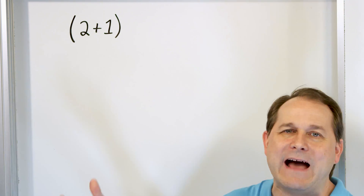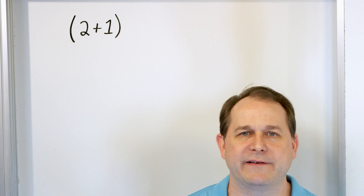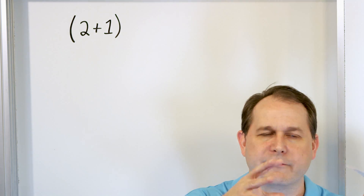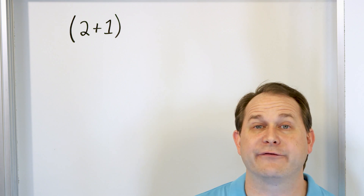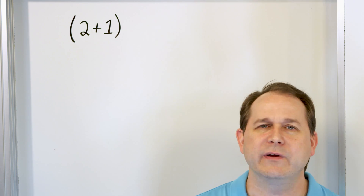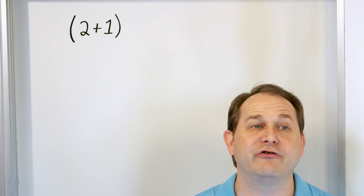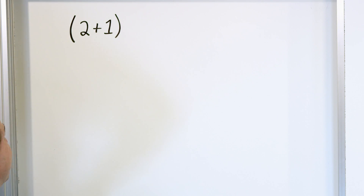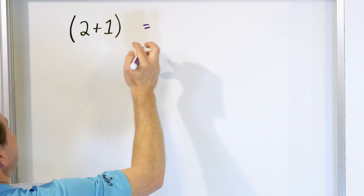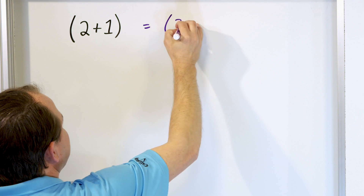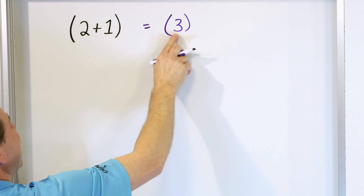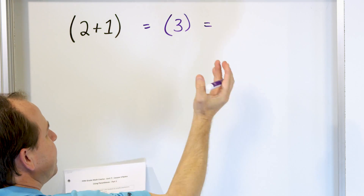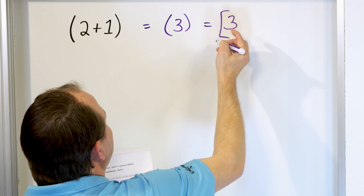In this case, the only thing we have is two plus one on the inside of the parentheses, so it's real simple. As we get larger and larger expressions, we have to look at the parentheses first and do it first. The only reason we ever use parentheses is when we want to do what's inside of those first. Two plus one is three, and once you have a single item inside the parentheses you can drop them. The answer is three.